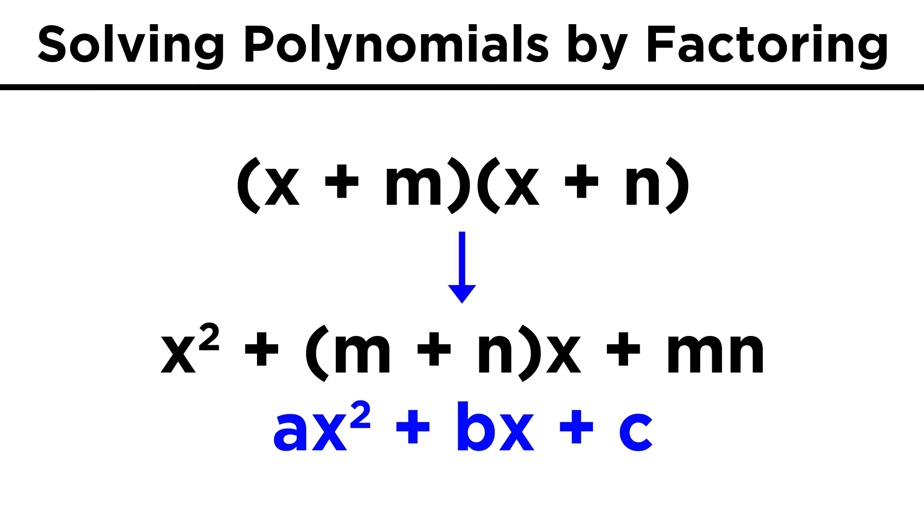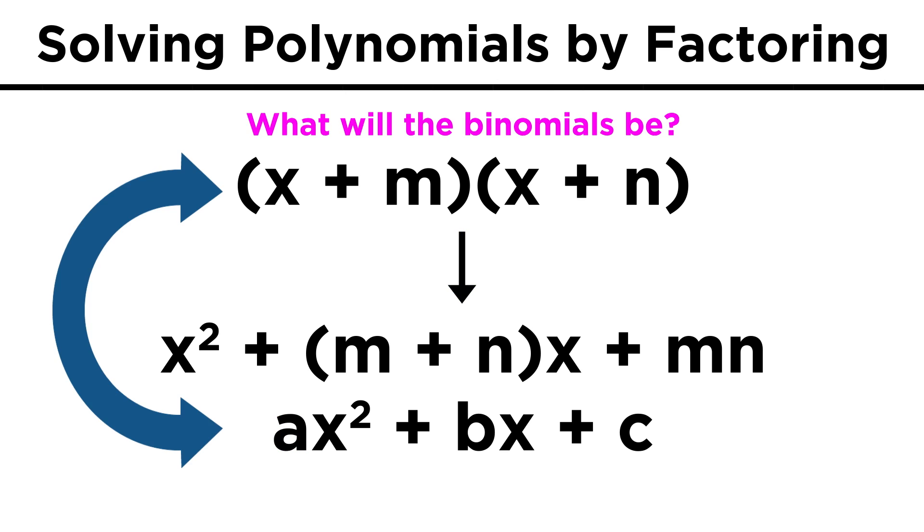So what that means is that if we have some polynomial in the form of ax² + bx + c, where a equals one, in order to find out which binomials could multiply together to get this polynomial, we need to find the two numbers, m and n, that go in the binomials, and they must be numbers that multiply together to give c, and add together to give b.